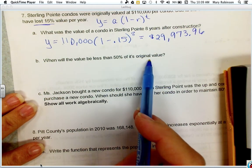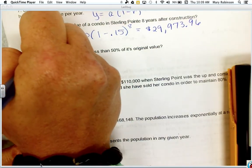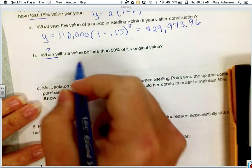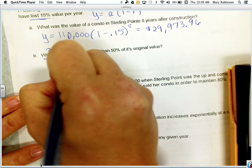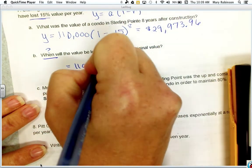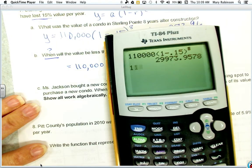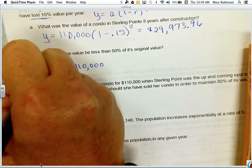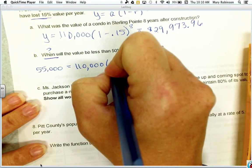So this time, we're going to be solving for our exponent, time. We know that if we purchased it for $110,000, and we're looking for when it will be 50% of its value, we're just dividing it in half or multiplying by 0.5. So it's going to be $55,000. We're wanting to know how long before it loses that value.